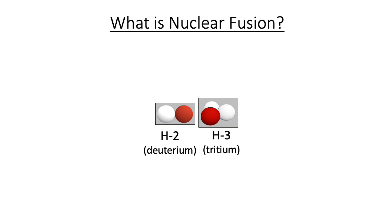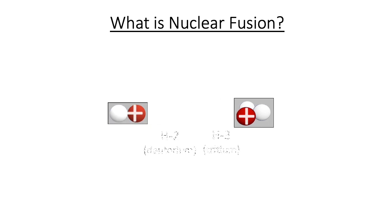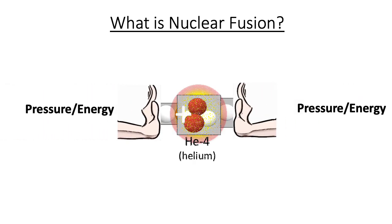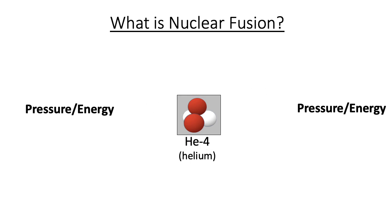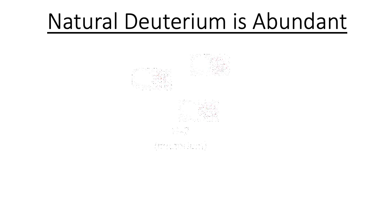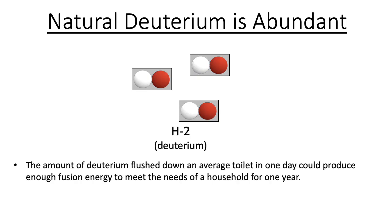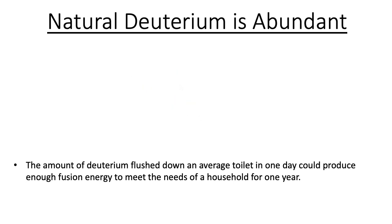The difficulty is that the atomic nucleus carries a positive charge. Like charges repel and will only combine with the input of sufficient pressure and energy — plentiful on the Sun, but more challenging here on Earth. On the upside, fusion fuel is abundant. The amount of deuterium flushed down an average toilet in one day could produce enough fusion energy to meet the needs of a household for a year.